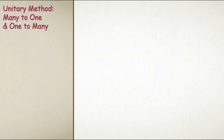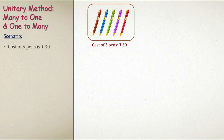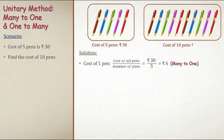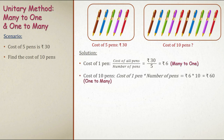We have six candies wherein the total cost is rupees 30. If each candy costs rupees 5, we add five six times which gives us rupees 30. We simply divide the total cost of candies by total quantity, which is rupees 30 by 6, giving us rupees 5. This is the concept of division where we know many and find the cost of one.